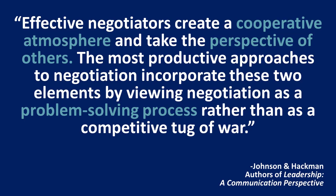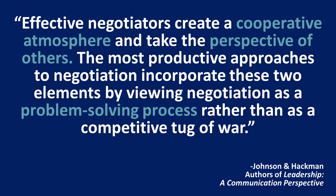As we move into conflict resolution, here's a quote to think about: 'Effective negotiators create a cooperative atmosphere and take the perspective of others. The most productive approaches to negotiation incorporate these two elements by viewing negotiation as a problem-solving process rather than as a competitive tug-of-war.' Fisher and Urey, from research in 1981, present a step-by-step method of conflict negotiation. Principled negotiation emphasizes deciding issues on their merits rather than through competitive haggling or through excessive accommodation. Each principle focuses on one of the four basic elements of negotiation: people, interests, options, and criteria.